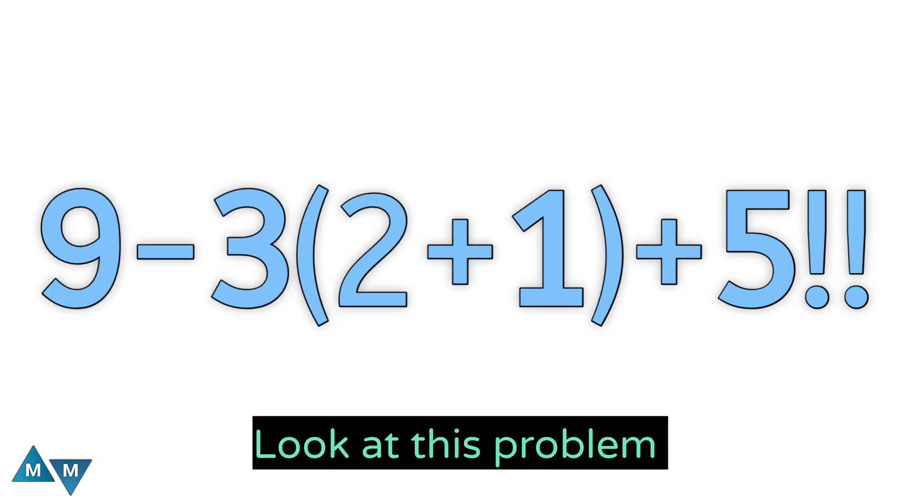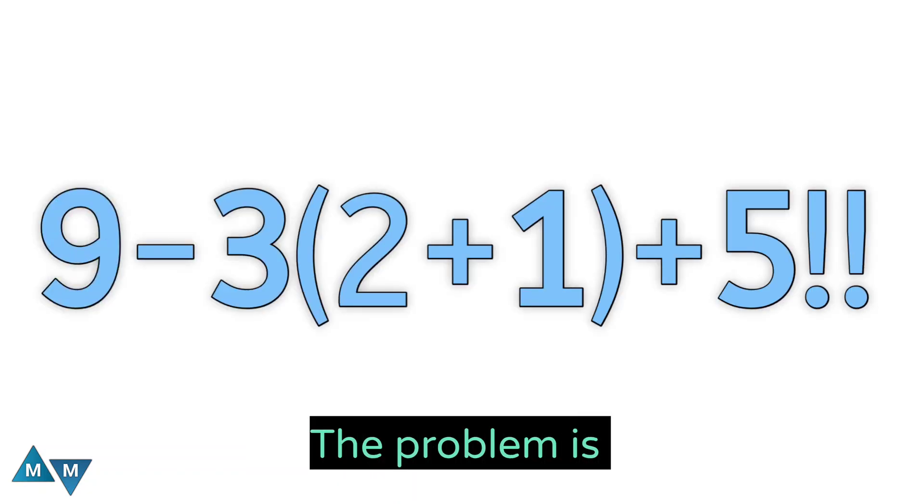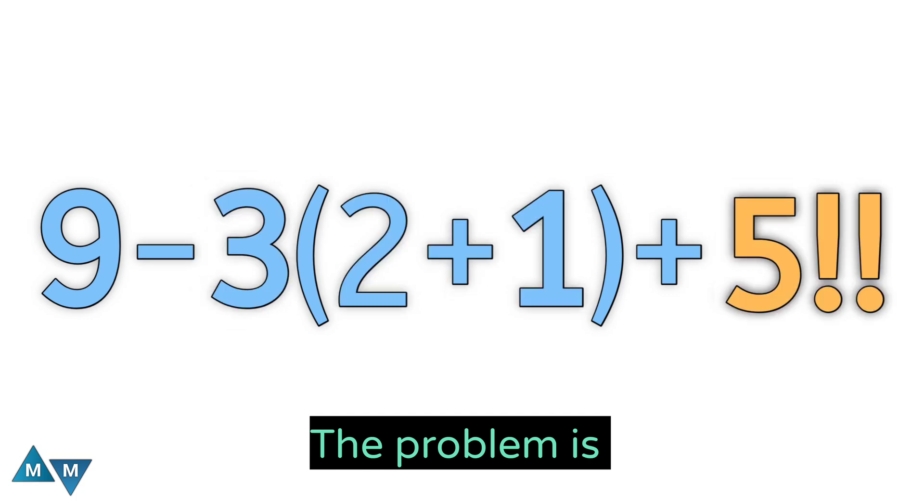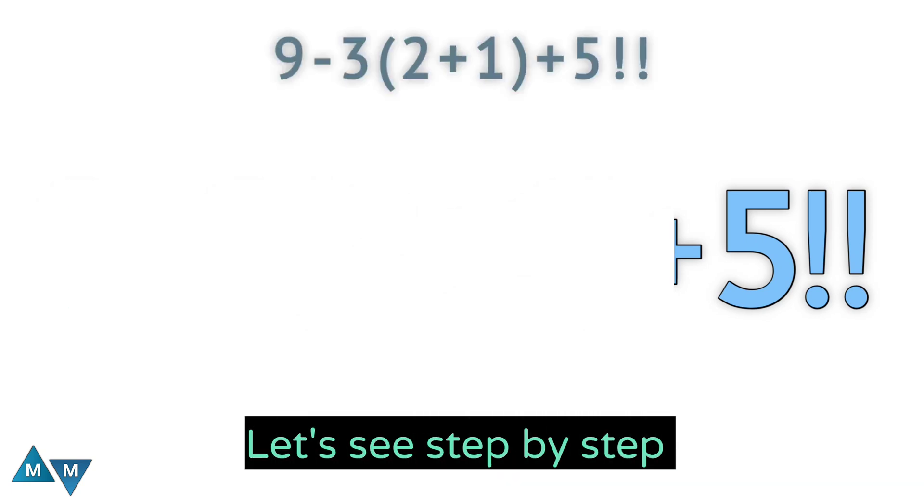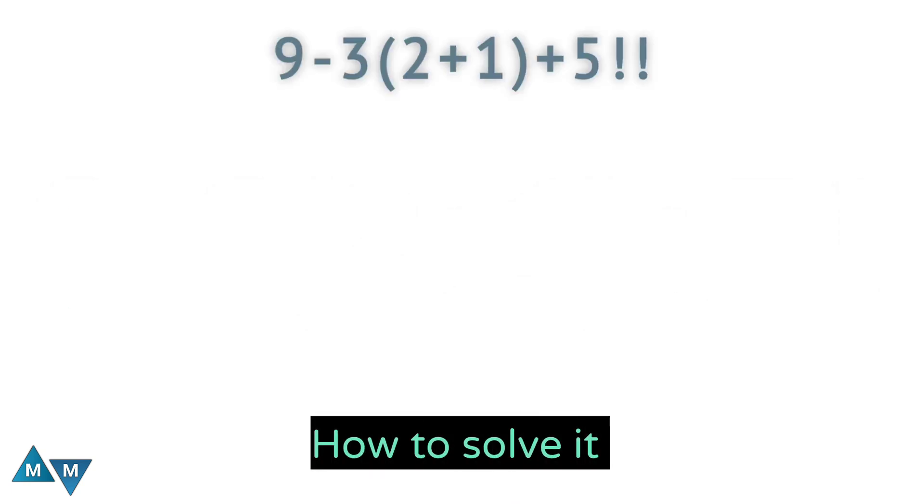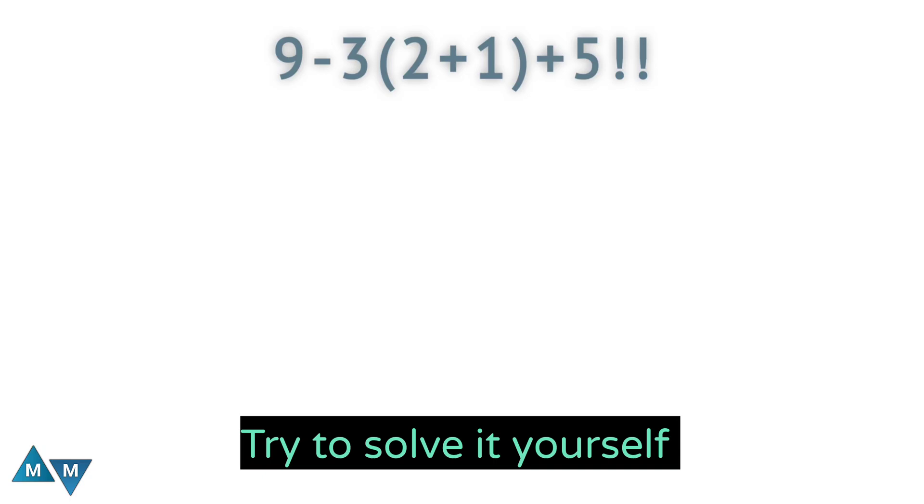Hi guys, look at this problem. The problem is 9 minus 3 times parentheses 2 plus 1 plus 5 double factorial. Can you solve this problem? Let's see step by step how to solve it. But first, try to solve it yourself and comment your answer below.